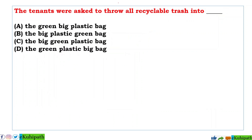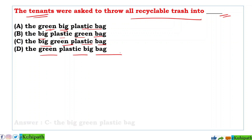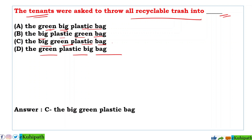Next: The tenants were asked to throw all recycled trash into dash. Options include: the green big plastic bag, the big plastic green bag, the big green plastic bag, and the green plastic big bag. The correct answer is C — the big green plastic bag. So: throw all recycled trash into the big green plastic bag.